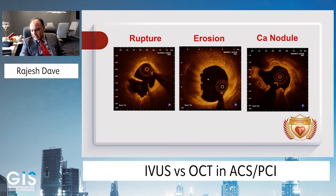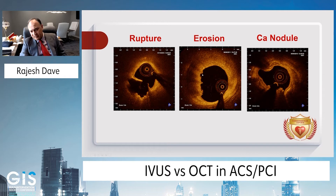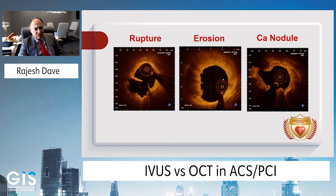Erosion, on the other hand, is characterized by no rupture — the fibrous cap is intact. However, there is an irregular border and a thrombus attached to it. You can see the plaque in the artery with thrombus attachment and this irregular border, along with a lipidic plaque causing attenuation in shadow. It's important to recognize this entity, especially in Asian countries where many young patients present with acute coronary syndrome and plaque erosion is very common.